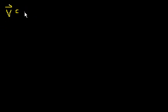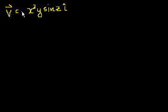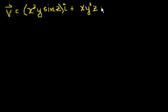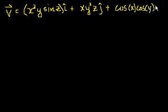We'll take the curl of a fairly fancy vector field — one that I have trouble visualizing, but that we can mathematically chug through. So let's say our vector field — I'll do a three-dimensional vector field, just to do a fairly complicated example. I'm going to make it up on the fly. So in the x direction, the magnitude of the field is x squared y sine z, plus xy squared z in the j direction, and in the z direction, cosine of x times cosine of y.